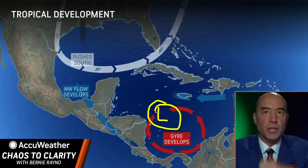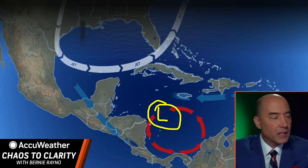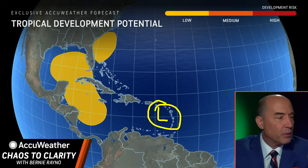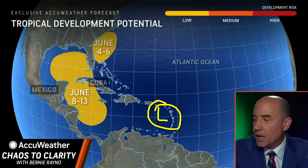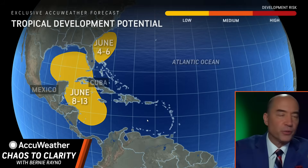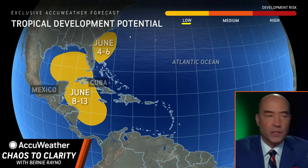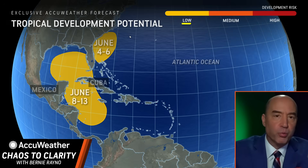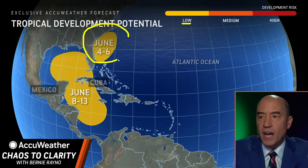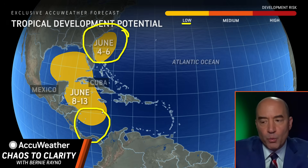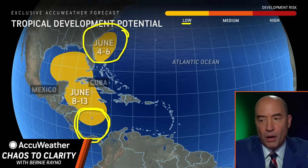Do we have any of those conditions in the Atlantic right now? The short answer is kind of. We put this out a couple days ago — our chances for tropical development. Low chance, low chance — I would give both of these probably less than 20%: one off the Southeast coast of the United States, and a gyre we are expecting to form in the Caribbean.